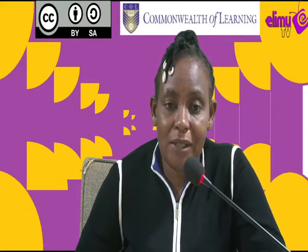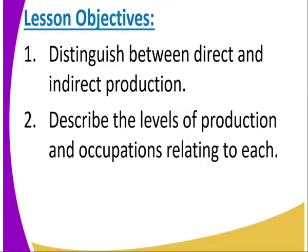Now, let us look at the lesson objectives. We are going to distinguish between direct and indirect production, then describe the levels of production and occupation relating to each.